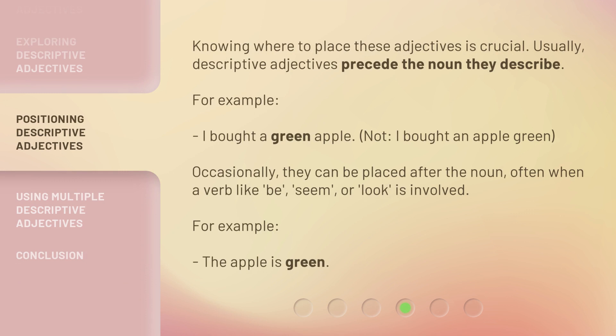Knowing where to place these adjectives is crucial. Usually, descriptive adjectives precede the noun they describe. For example, 'I bought a green apple,' not 'I bought an apple green.' Occasionally, they can be placed after the noun, often when a verb like 'be,' 'seem,' or 'look' is involved. For example: 'The apple is green.'